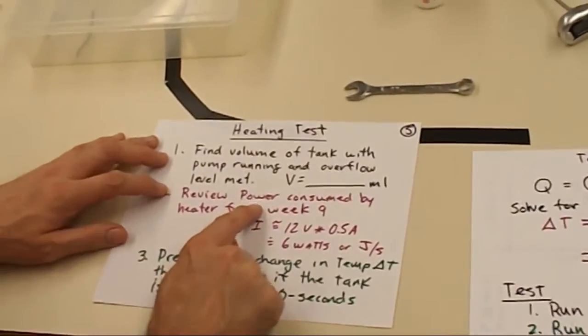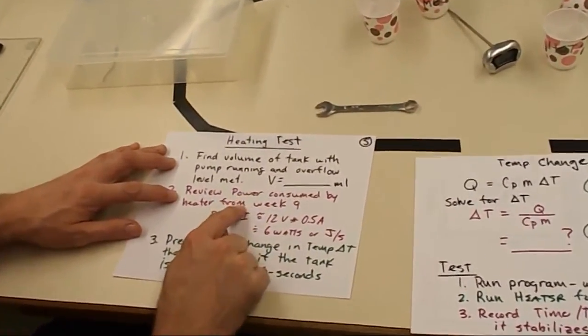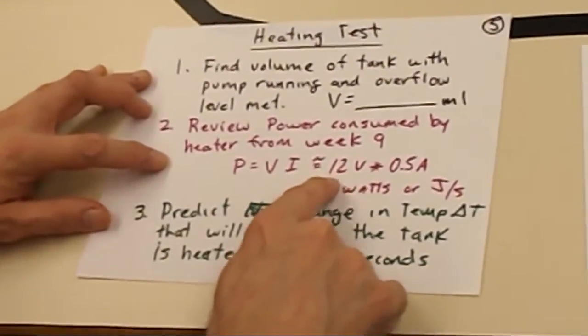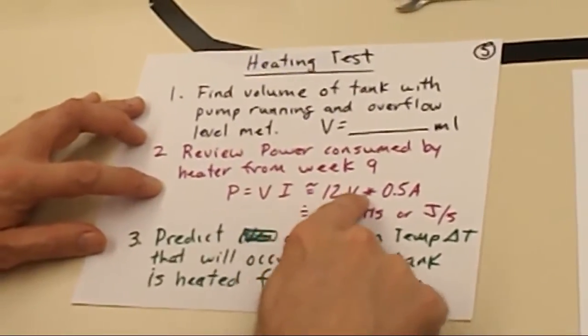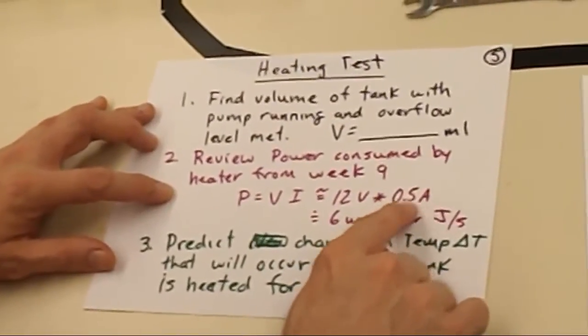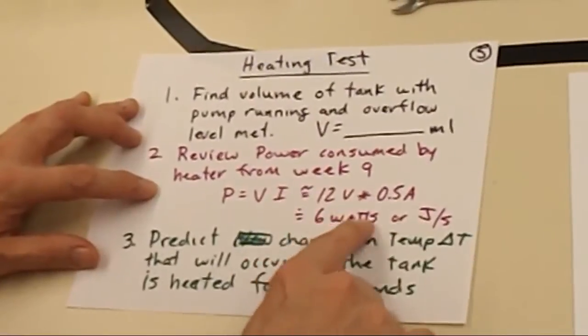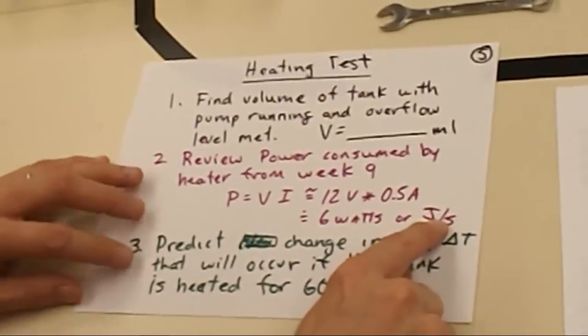Alright. So now that you have that volume, that completes some of the information that you'll need. The next, you'll need to review the work from week nine because it's got the power that is delivered to the heater. So last week we did experiments to find out how much power the heater drew. And so we've got 12 volts approximately. You'll have accurate readings. It's a half an amp. I don't think that's correct, but it's close. Figure out exactly how many watts your heater was drawing last week. And remember, watts is a joule per second. That's energy per second. This is the value you're going to need.